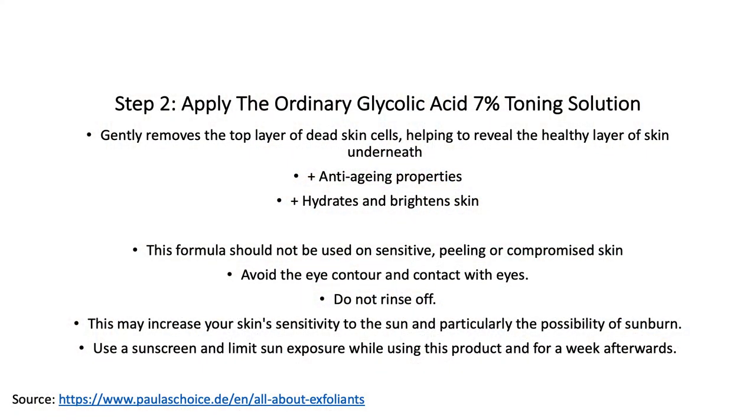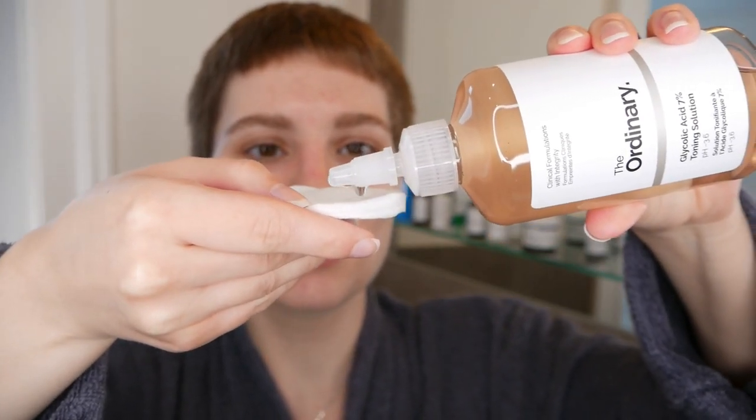For the PM skincare routine, start again with a freshly washed face — repeat the cleansing step from the AM routine. Then move on to The Ordinary Glycolic Acid 7% Toning Solution. Use a clean cotton pad and soak it with the toner, then apply it evenly all over the face and neck area. Please avoid any contact with the eyes and eye contour. Do not wash off the toner — leave it on the skin.